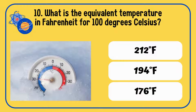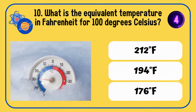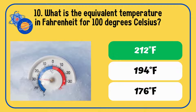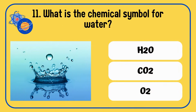What is the equivalent temperature in Fahrenheit for 100 degrees Celsius — 212°F, 194°F, or 176°F? The answer is 212 degrees Fahrenheit. What is the chemical symbol for water — H2O, CO2, or O2? The correct answer is H2O.